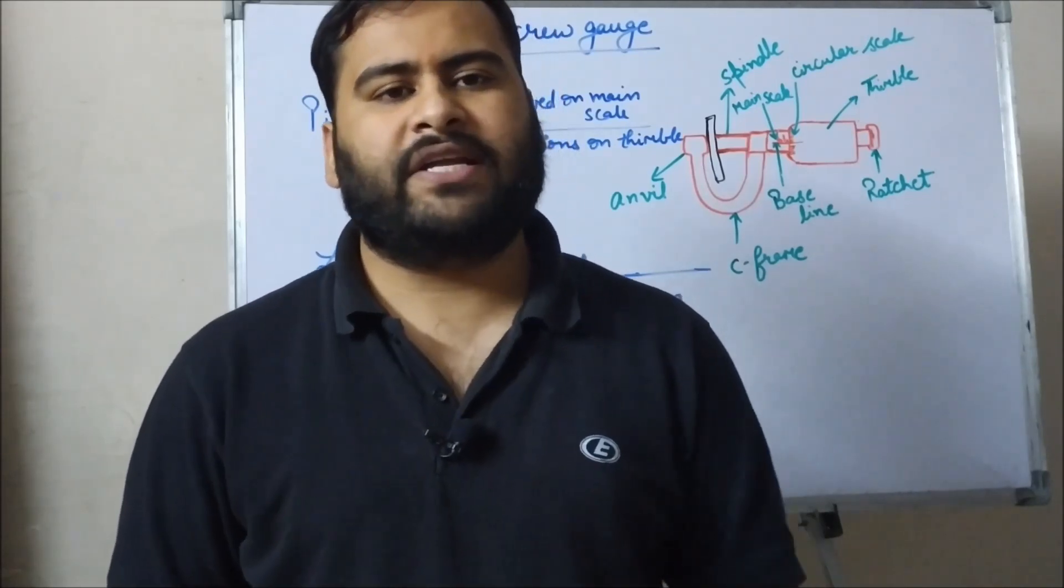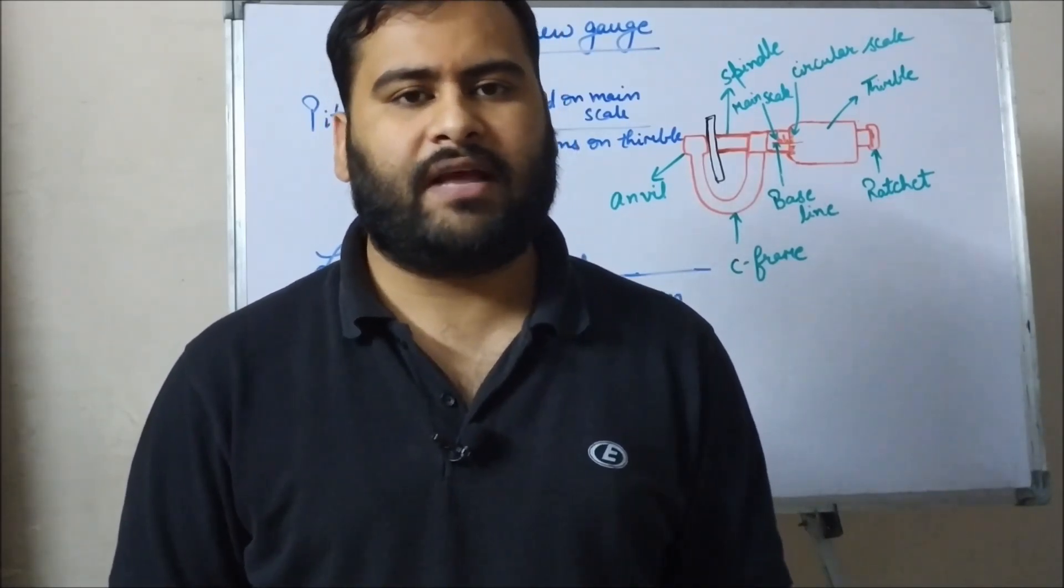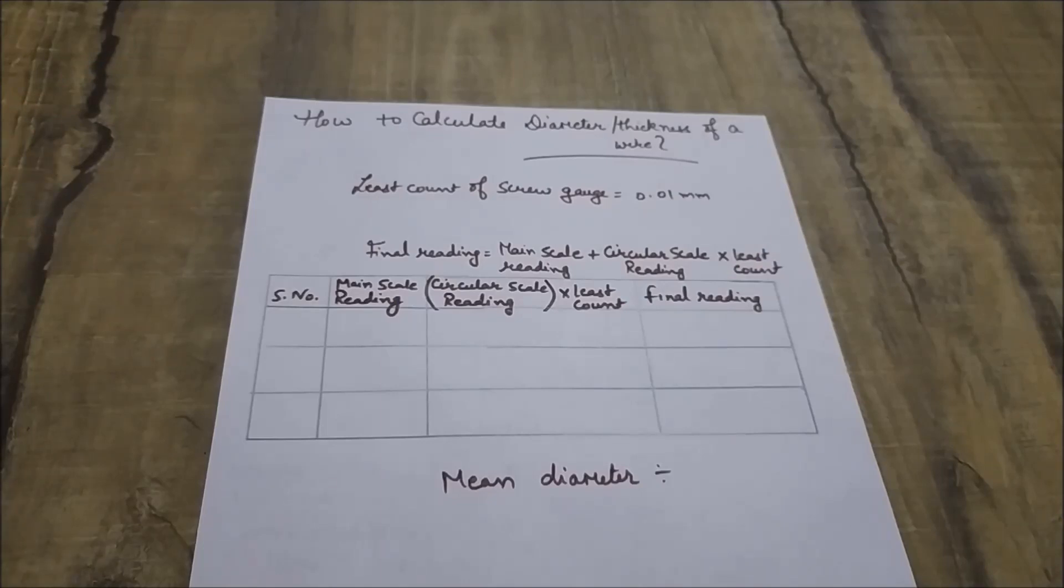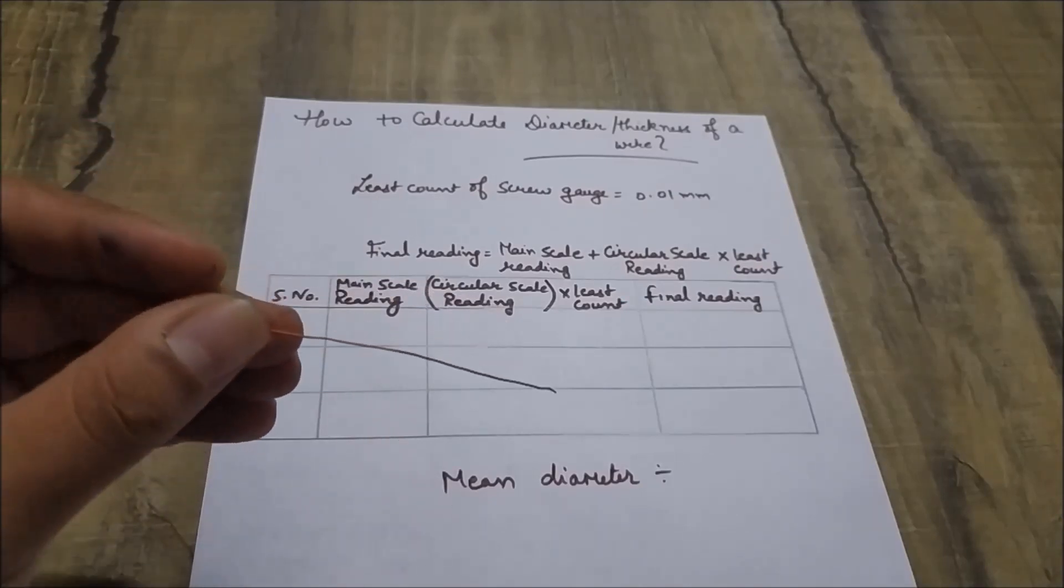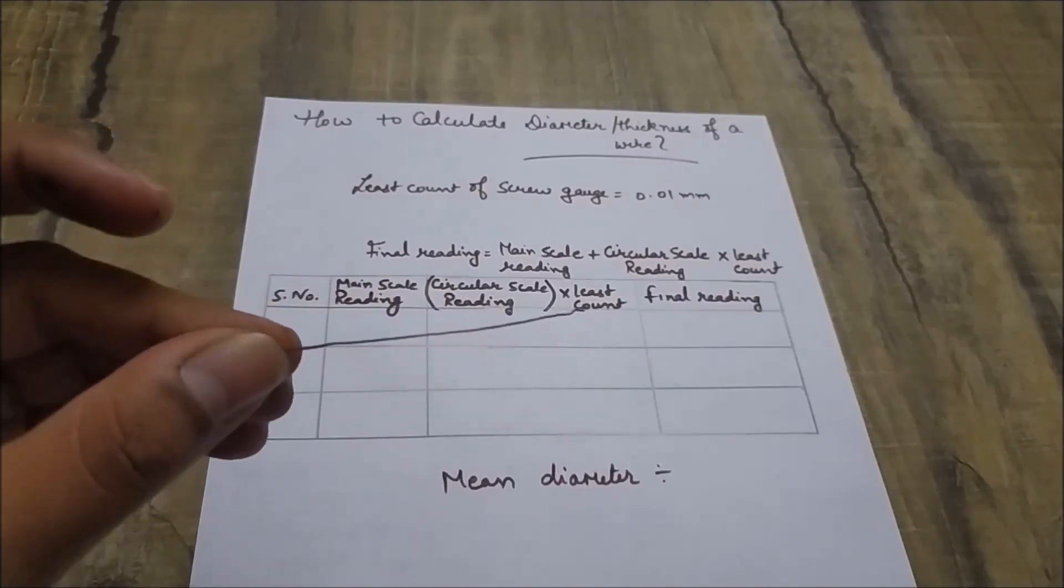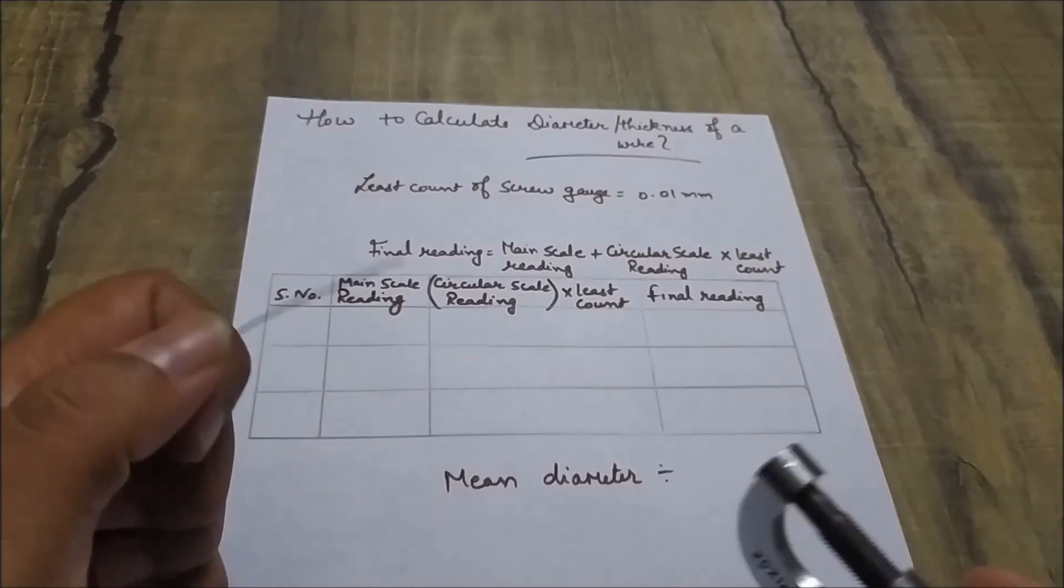In the next video, I will be teaching you about how to calculate the volume of an irregular lamina. Now students, this is my experiment: how to calculate the diameter of this wire, or you can say the thickness of this wire. Now we will calculate this with the help of screw gauge.